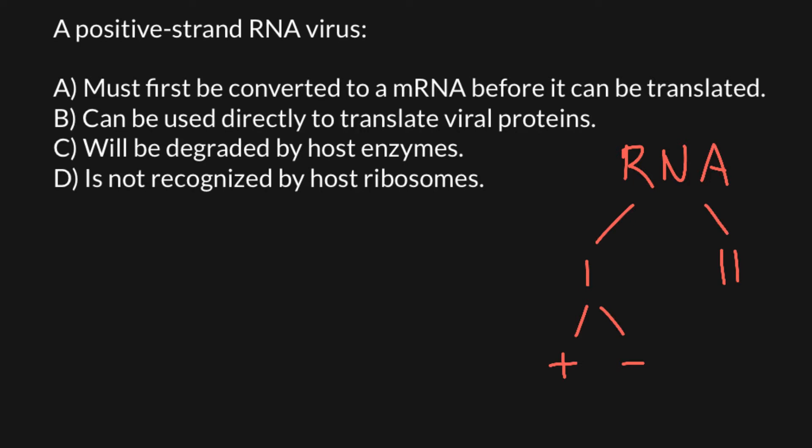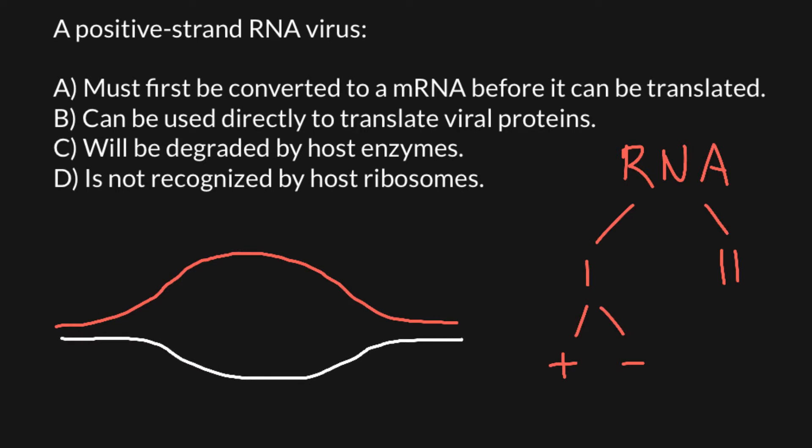Before I explain what is the difference and what is the significance, I want to show an analogy with transcription of double-stranded DNA, so it would be much easier for you to understand the difference between positive and negative RNA strands. Now imagine that here is a double-stranded DNA — here is one strand, here is another strand of the DNA, and here we see a replication bubble. And here we see messenger RNA that is transcribed from one of the strands of the DNA,